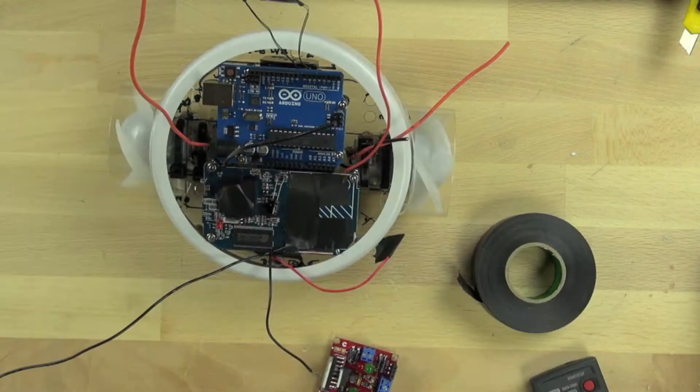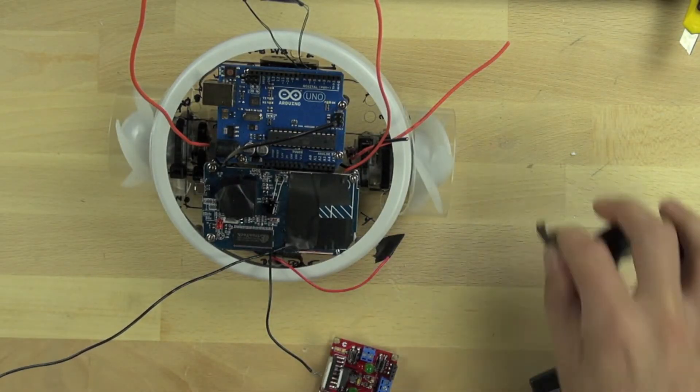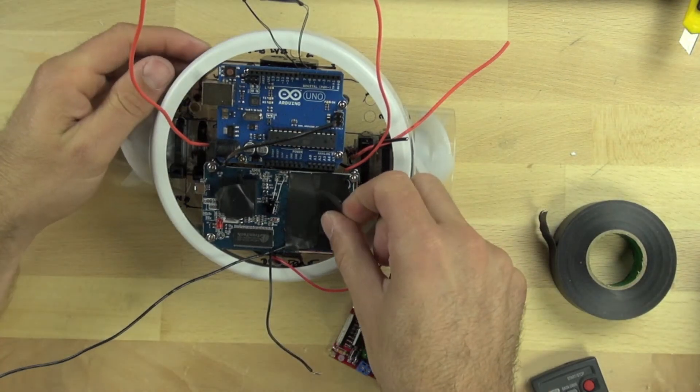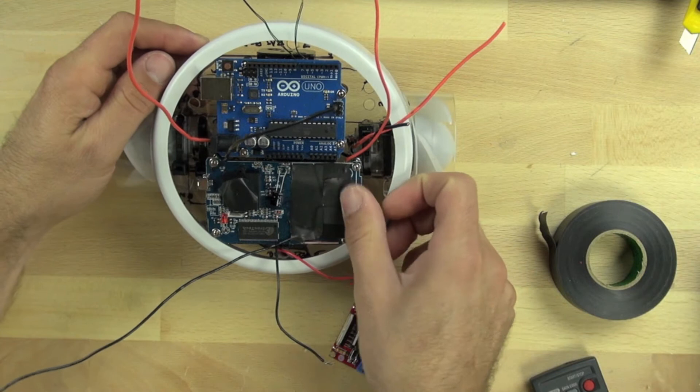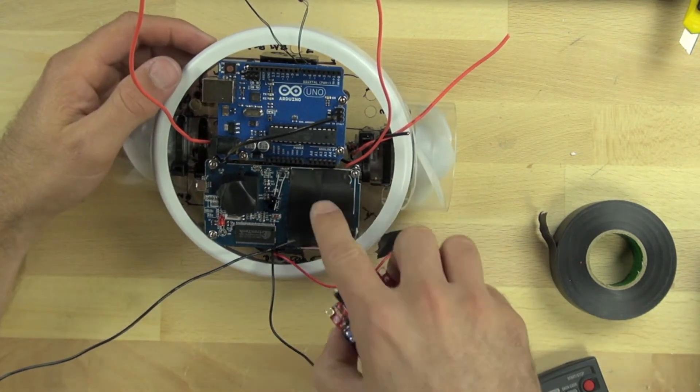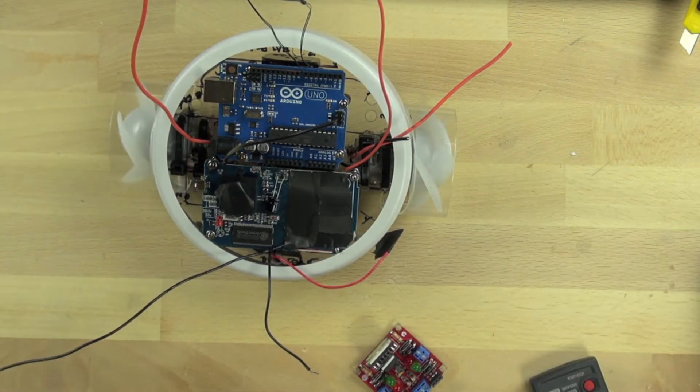To get started, we've begun taping the area where we're going to attach the L298 motor controller. The tape serves a couple purposes: it protects the board from the sharp leads on the bottom of our L298, and it also allows us to remove the L298 should we need to later because we're going to hot glue it down.